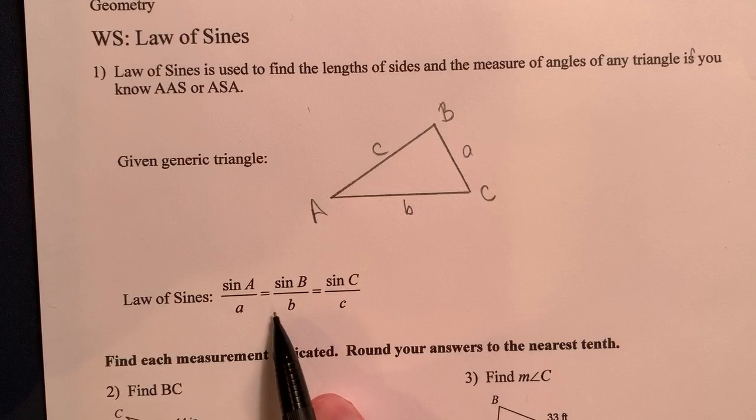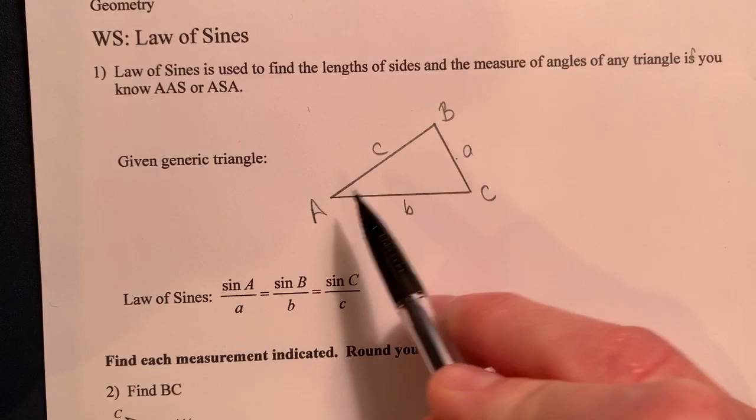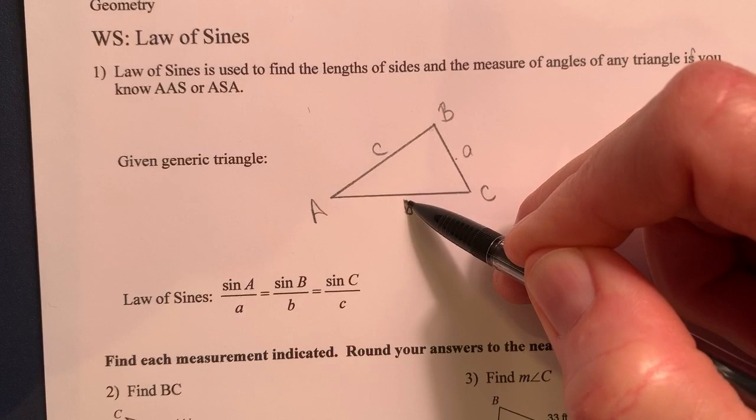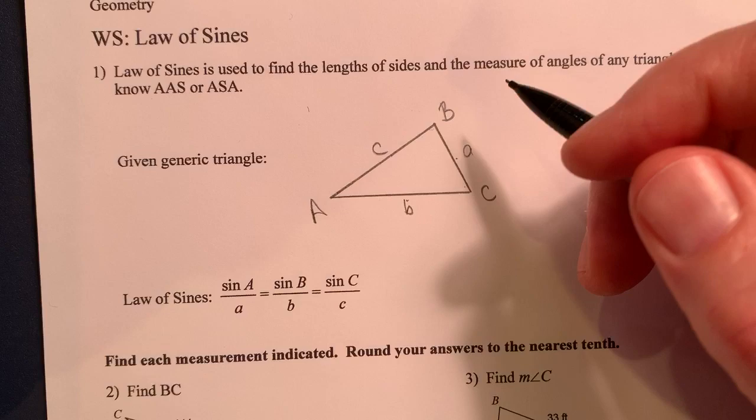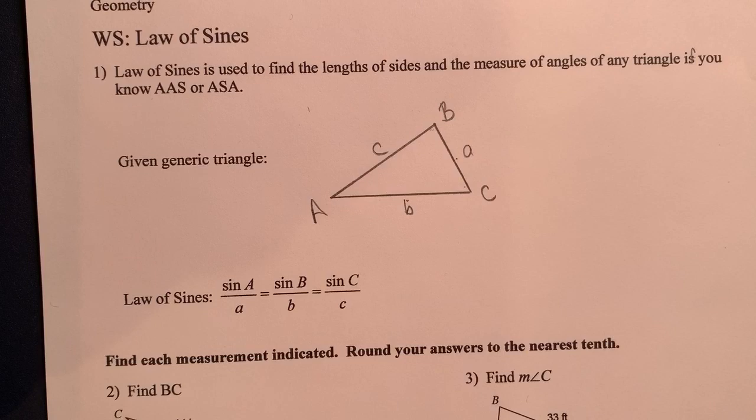So what the Law of Sines is, and you can see this, this is actually a proportion. And all it is is I would take the sine of this angle over this. That ratio would be equal to the sine of this angle over this side. That ratio would be equal to the sine of this angle over this side. So you're not going to do all three at the same time, but you'll be able to do two. And the advantage of this is with those ratios, you could find the lengths of sides and the measure of angles.